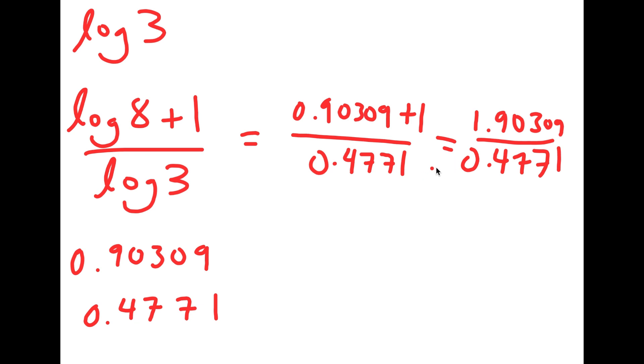Now, 1.90309 over 0.4771 is equal to 3.9889. So x is equal to 3.9889.